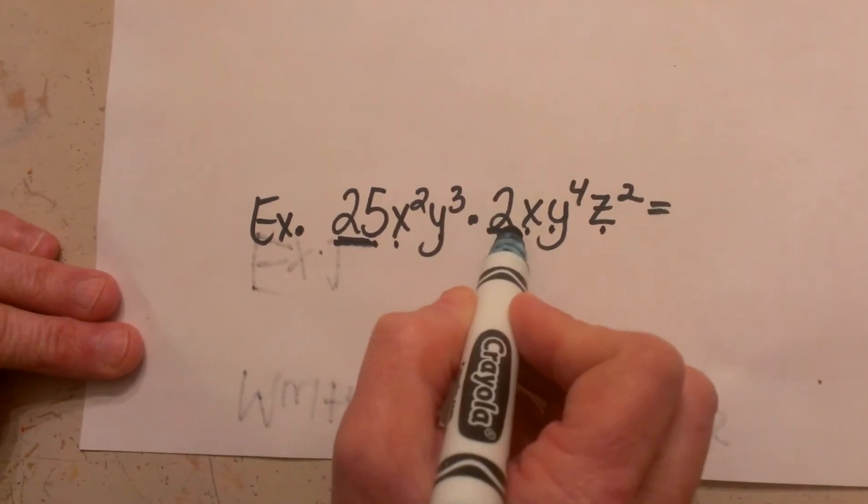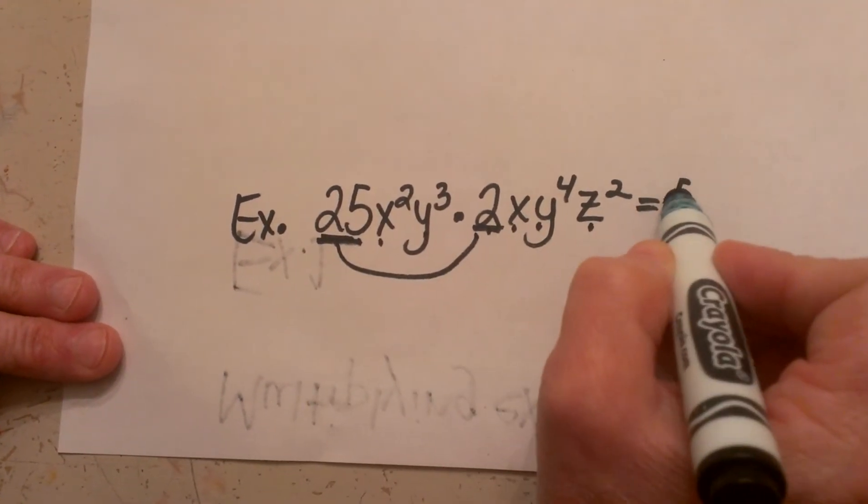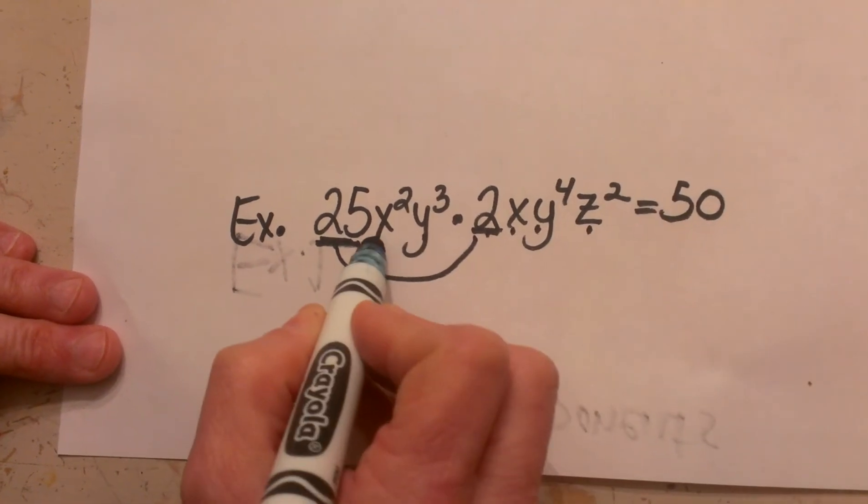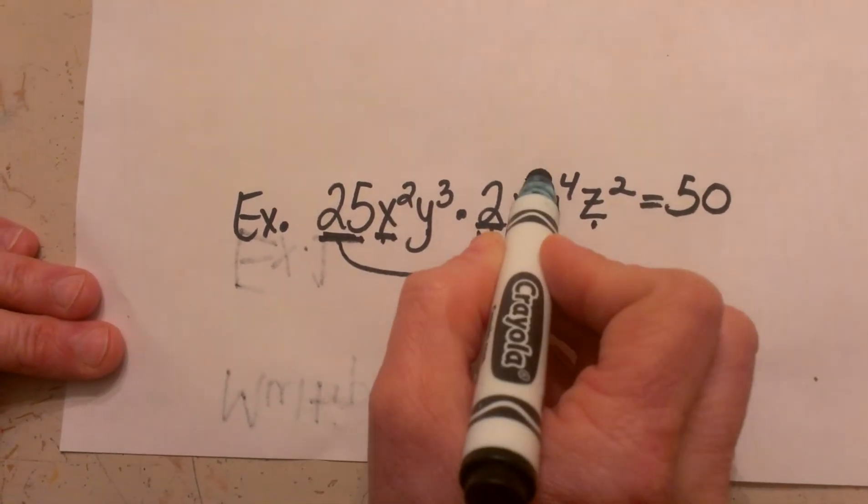Again I am going to use my rules. I multiply my coefficients together so I am going to get 50 x squared and x to the first power.